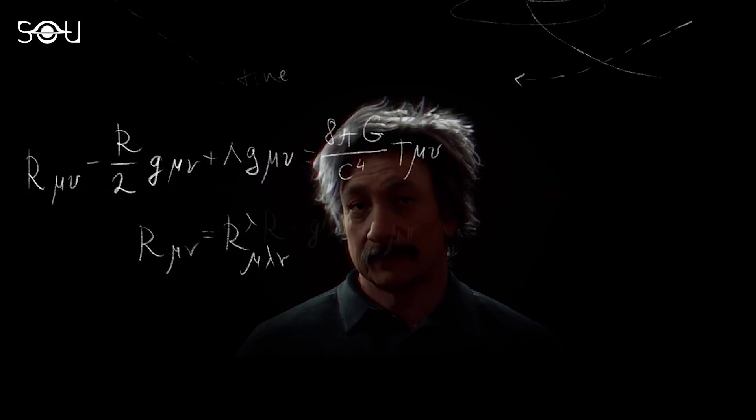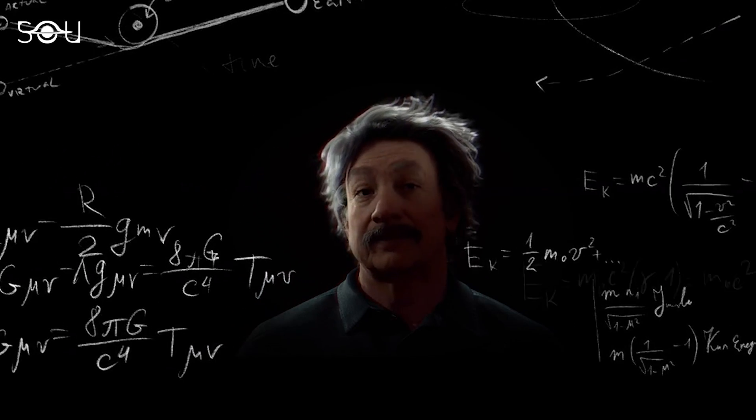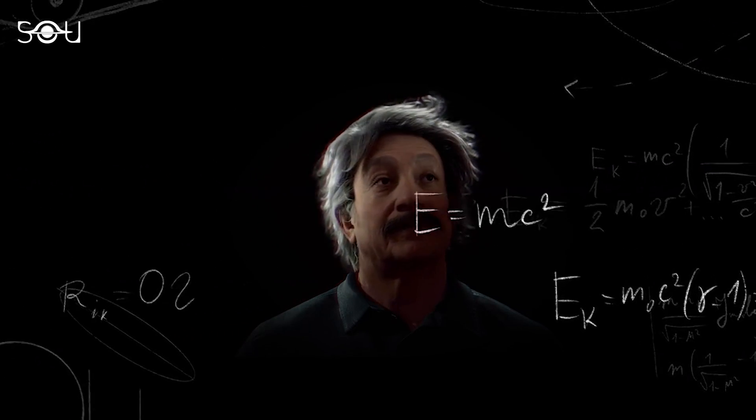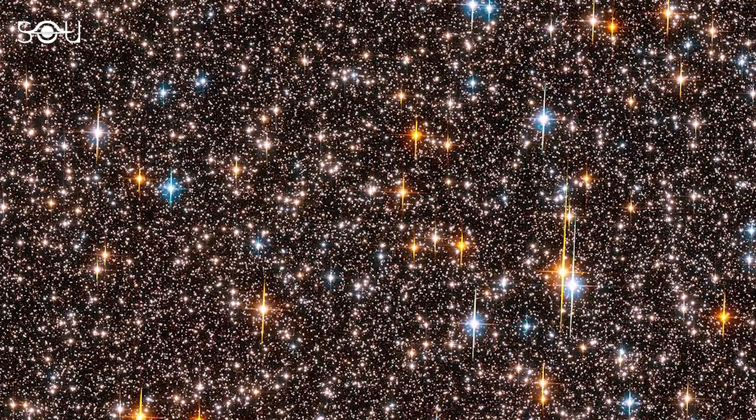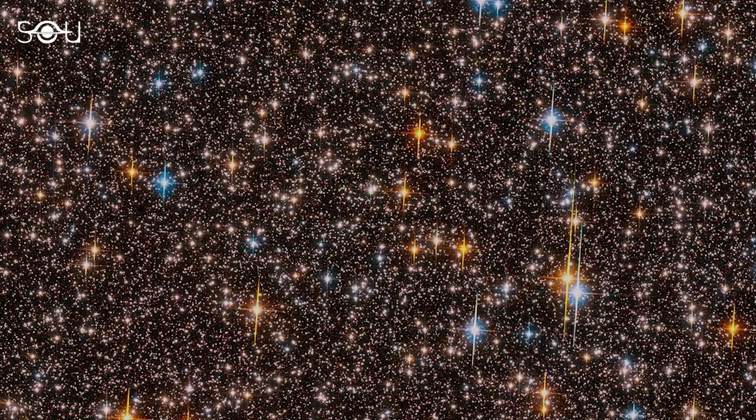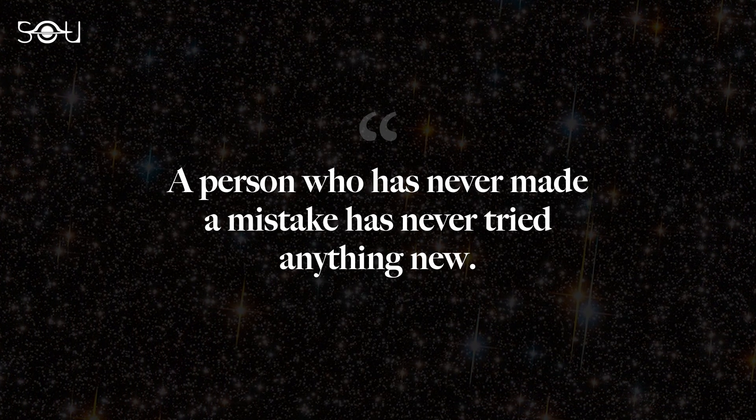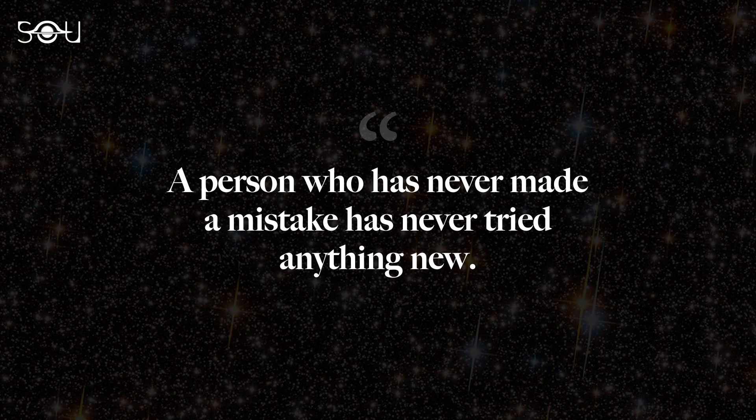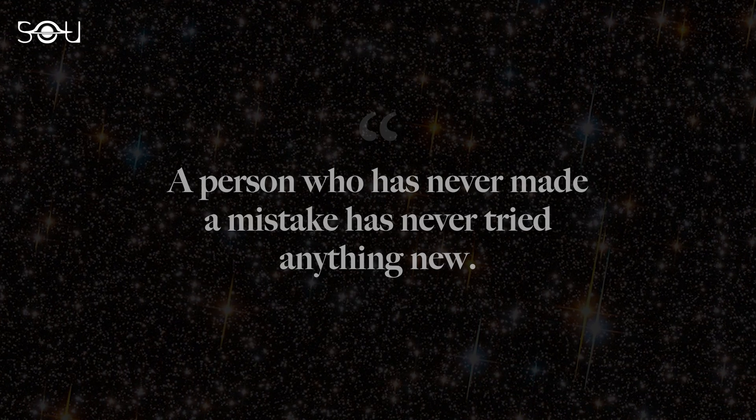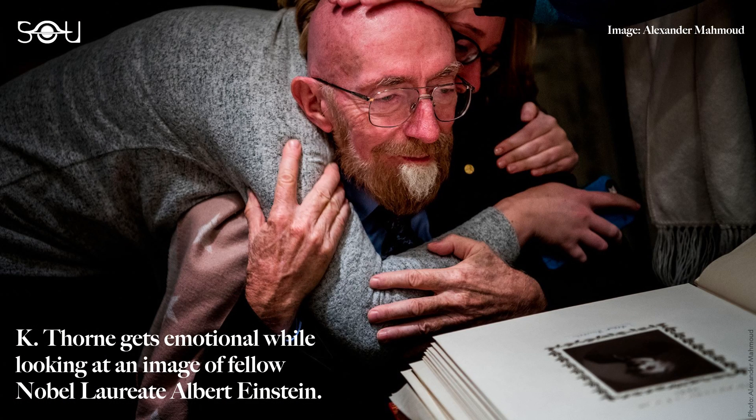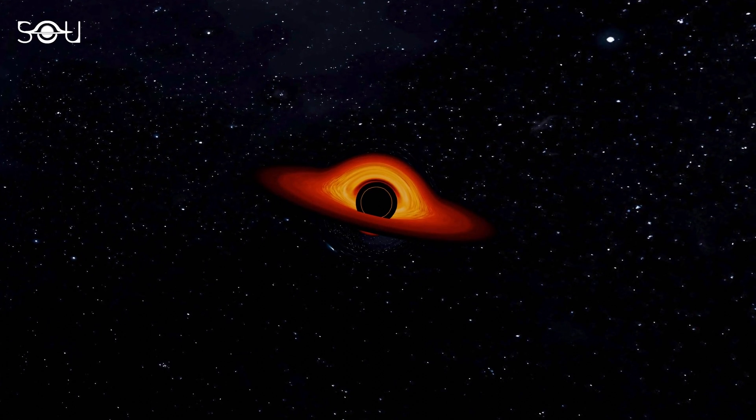No number of mistakes can outweigh Einstein's extraordinary accomplishments in physics and his contributions to our understanding of the universe. As he once rightfully said, 'A person who has never made a mistake has never tried anything new.' He was only a human in making these mistakes. His work has inspired many generations to take up physics and make a difference. And the fact that he did not abandon physics until his death, despite his mistakes, is a testament to his sheer intelligence.